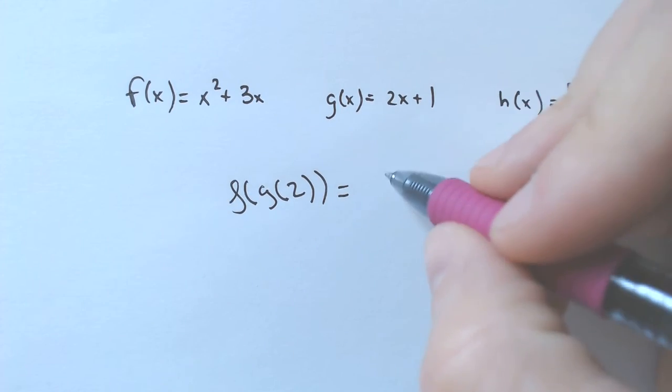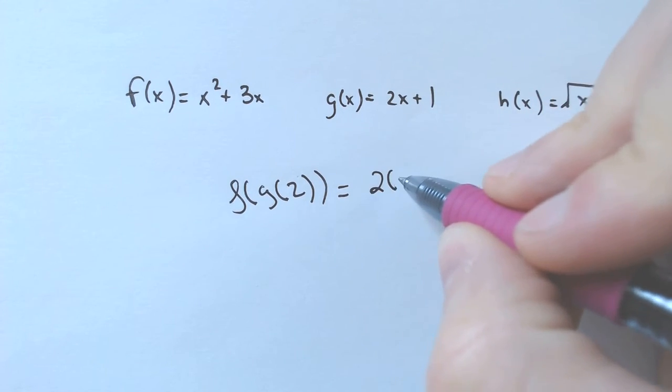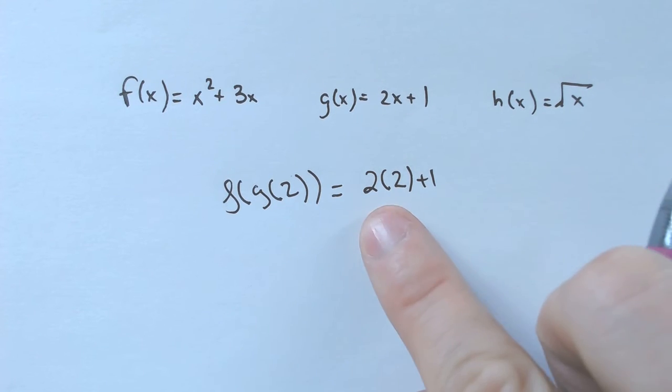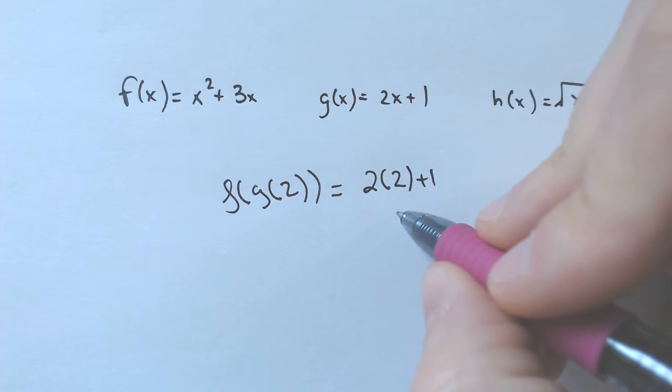So what you do first is you plug in 2 into g, which would be 2 times 2 plus 1, which is 5, because 2 times 2 plus 1 just equals 5.